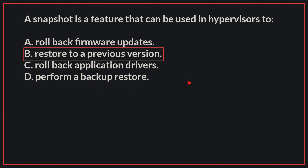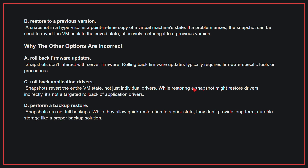A snapshot is a feature that can be used in hypervisors. The correct answer is B: Restore to a previous version. A snapshot in a hypervisor is a point-in-time copy of a virtual machine's state. If a problem arises, the snapshot can be used to revert the VM back to the saved state, effectively restoring it to a previous version.